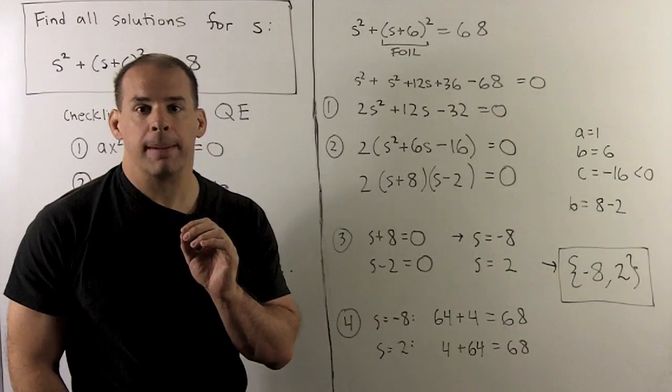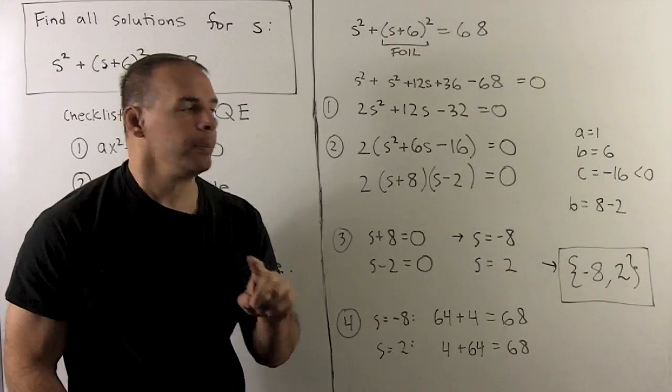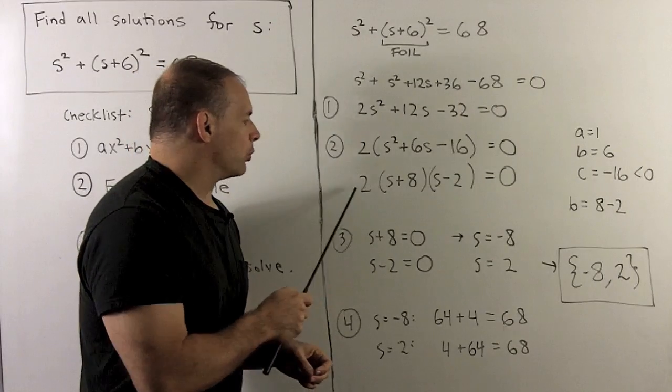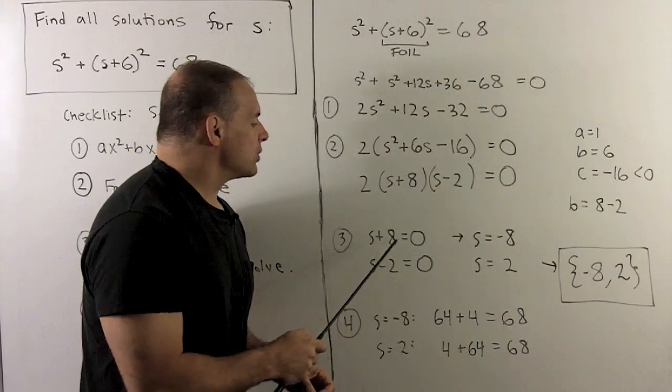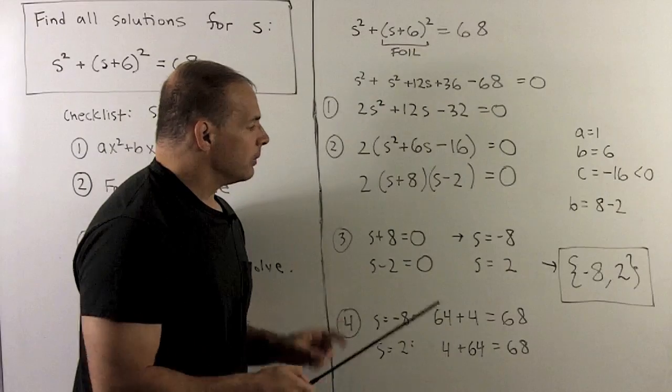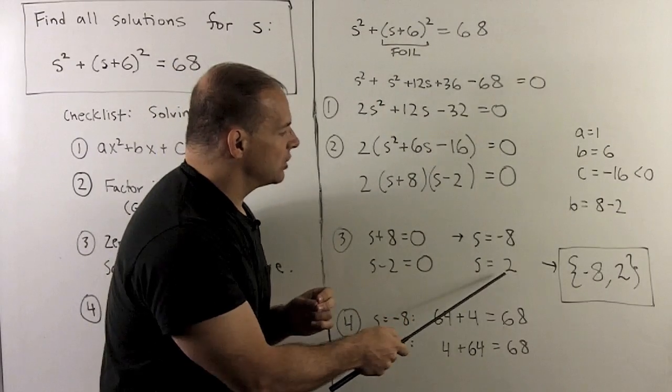We move to the next step. We set each factor equal to zero. So we just divide through by two or just ignore it. We have S plus eight equals zero, S minus two equals zero. So our solutions are minus eight and two.